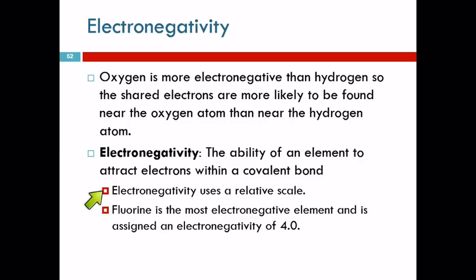We measure electronegativity on a relative scale. Fluorine is the most electronegative and they just assigned it an electronegativity of 4.0. So kind of like a grading scale. 4.0 is the best, the most electronegative. And everything else is lower than that.